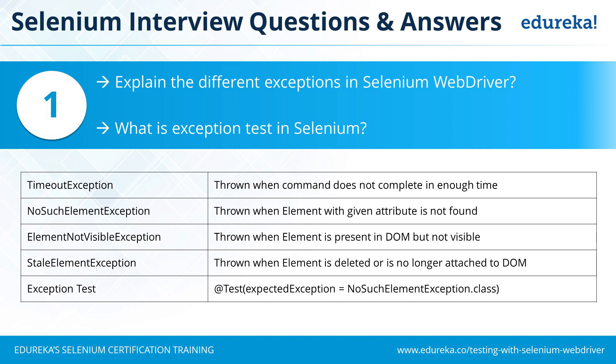For instance, you tell your Selenium WebDriver script that 30 seconds is the maximum time to wait before throwing an exception, and the command does not complete in 30 seconds — so you will receive a timeout exception. The next is NoSuchElementException, which is thrown when the element with a given attribute is not found. Selenium goes to the page source code and tries to match your particular attribute, such as an XPath equal to XYZ, and if it doesn't find it, it throws NoSuchElementException — meaning the element is not present in the DOM.